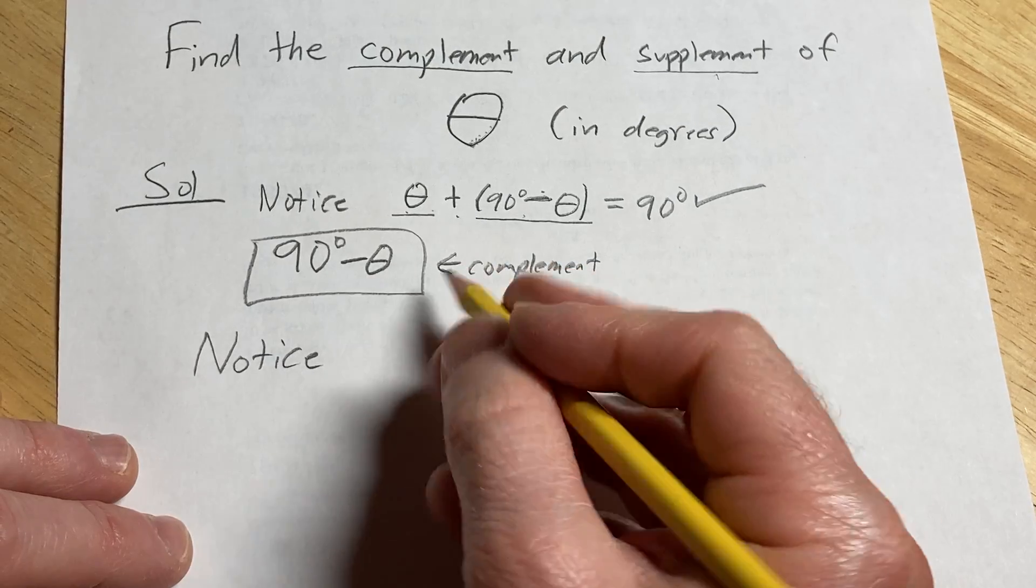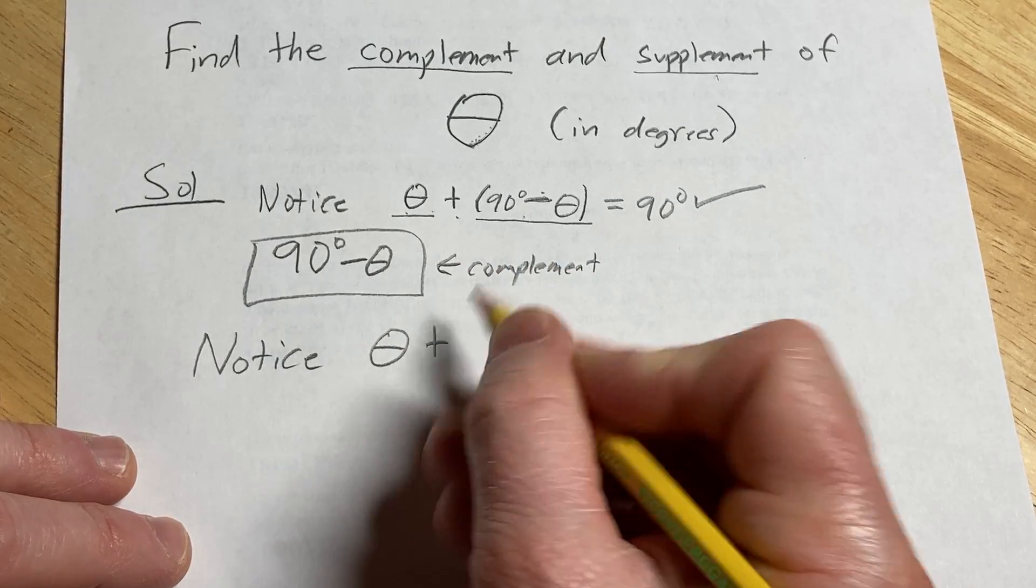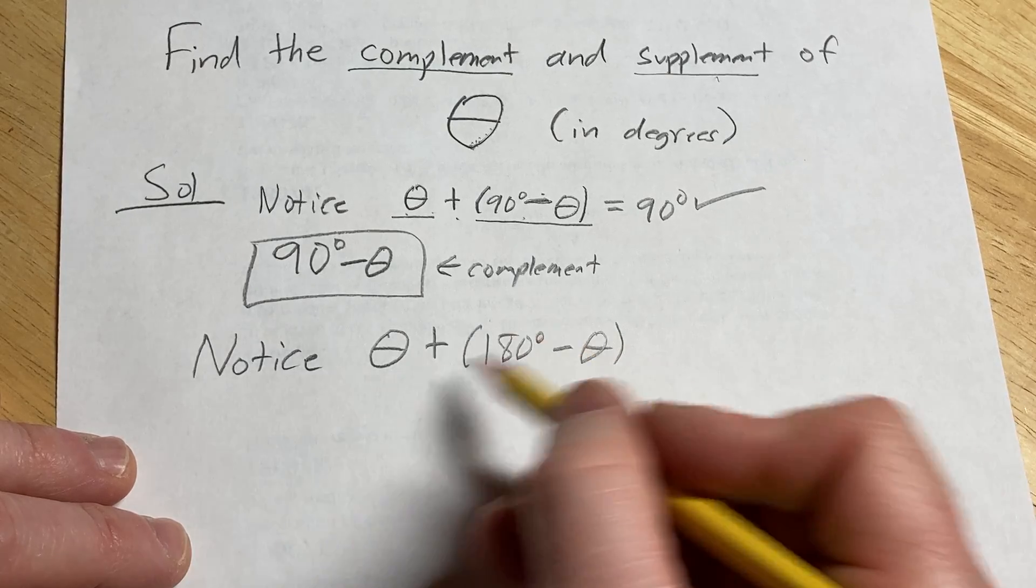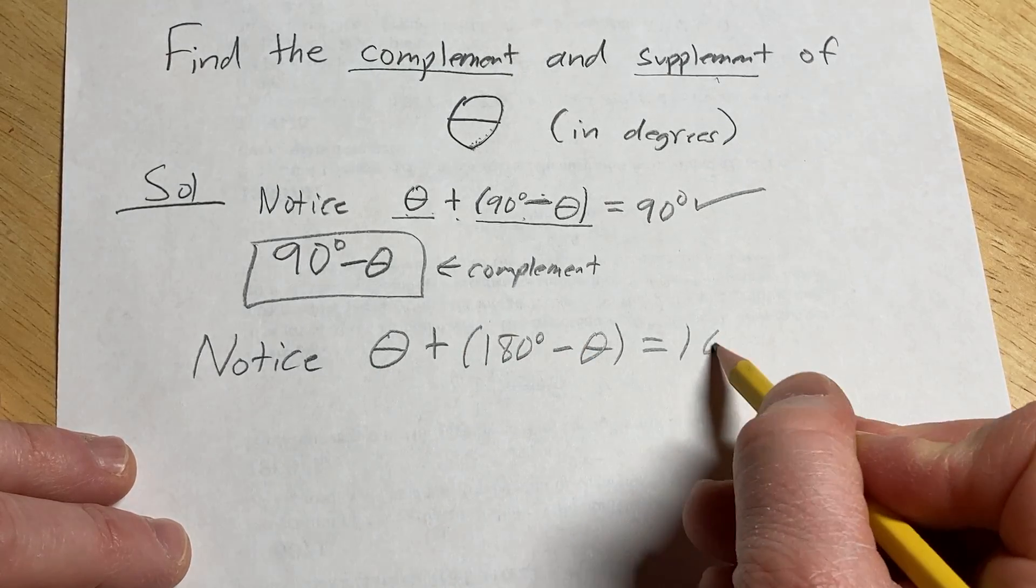notice if we take theta and we add 180 degrees minus theta, what happens is the thetas cancel and you just get 180 degrees.